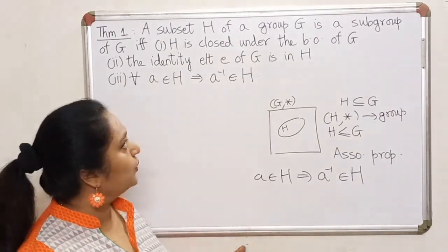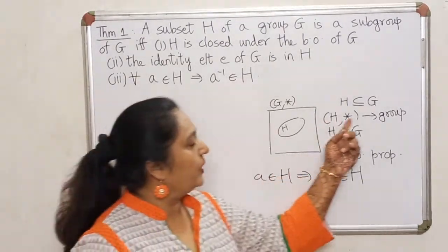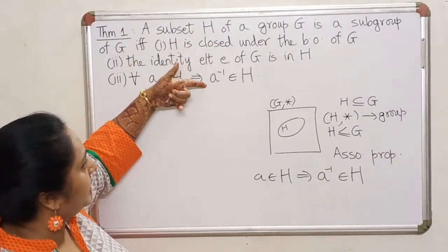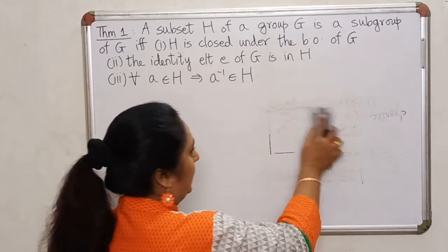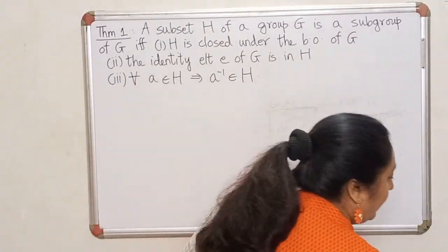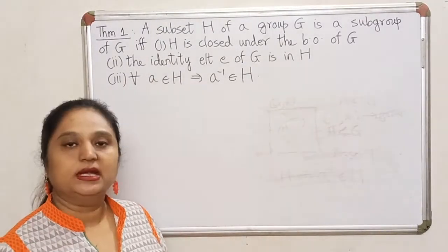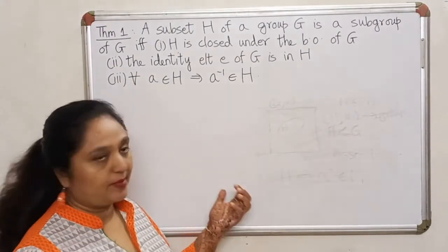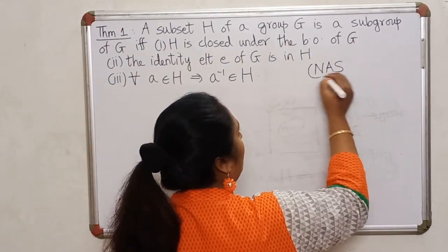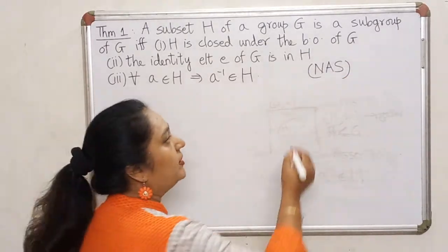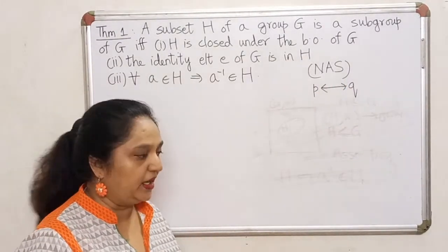The converse is of course also true. If H is a subgroup, then H is a group on its own, so closure, identity, and inverse properties are satisfied for H. So the result works in both directions: H is a subgroup if and only if these three conditions are satisfied. This is also called a necessary and sufficient condition for a subset to be a subgroup — and if and only if is the short form we use for necessary and sufficient.